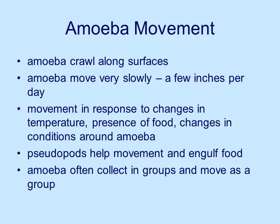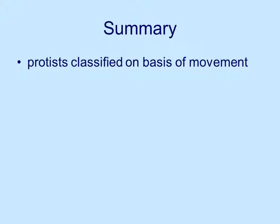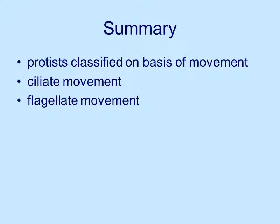Amoeba often collect in groups, whereas paramecia and euglena hang out by themselves. Amoeba will clump up in groups and move as a group. To summarize, we've talked about protists classified on the basis of movement: the cilia, the flagella, and the pseudopods that pull the amoeba along. Cilia sort of wave back and forth and can move the organism forward and backwards. Flagellate movement is like a propeller, driving the organism forward. Amoeba just kind of slide along a little bit and really don't move much at all.